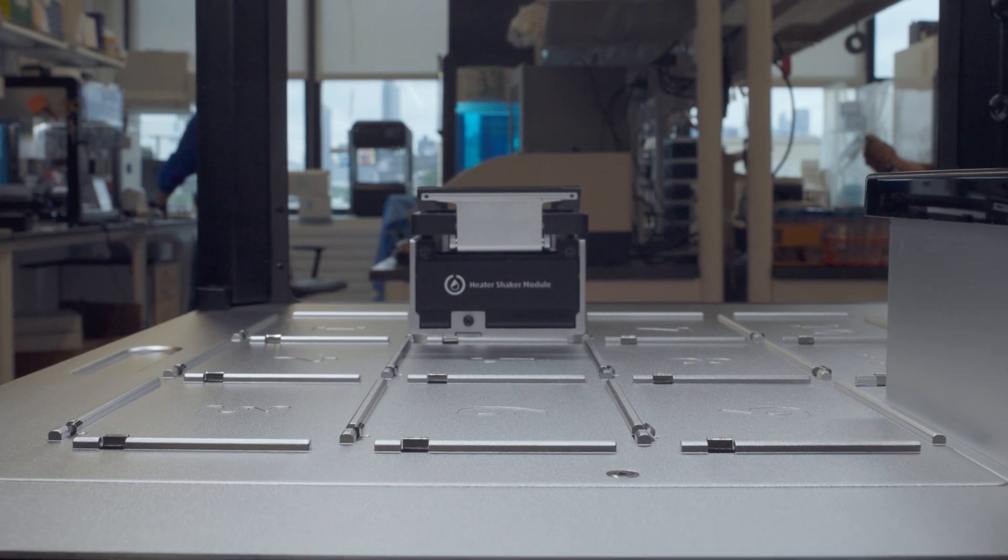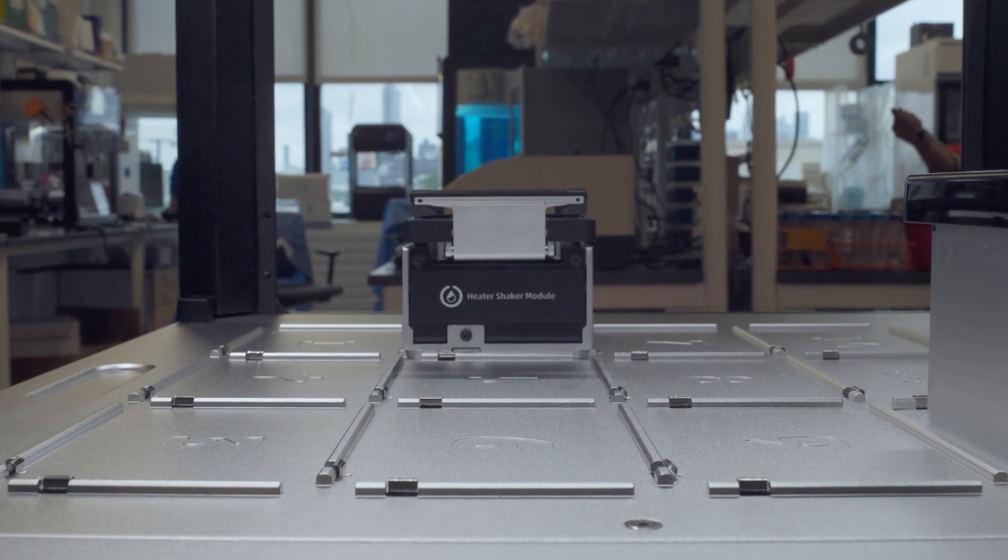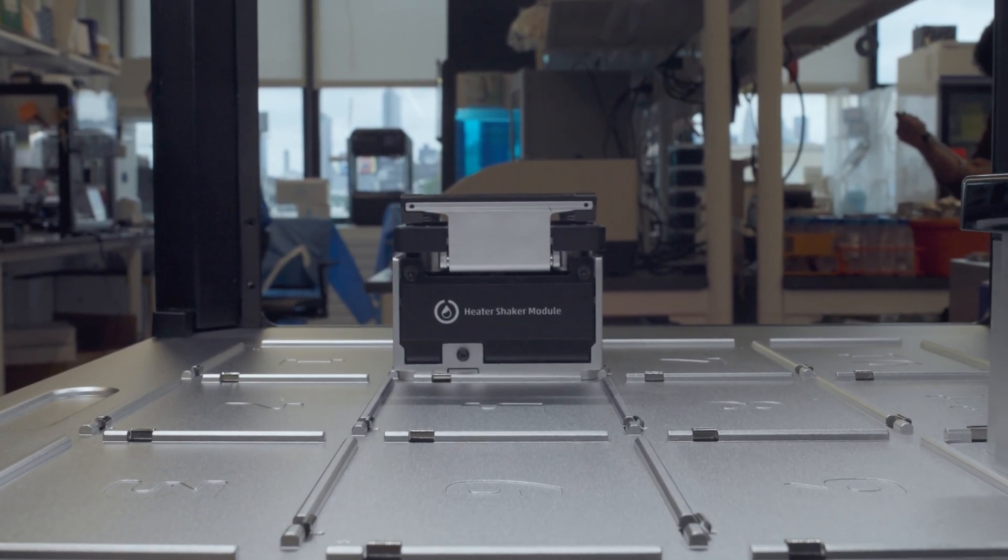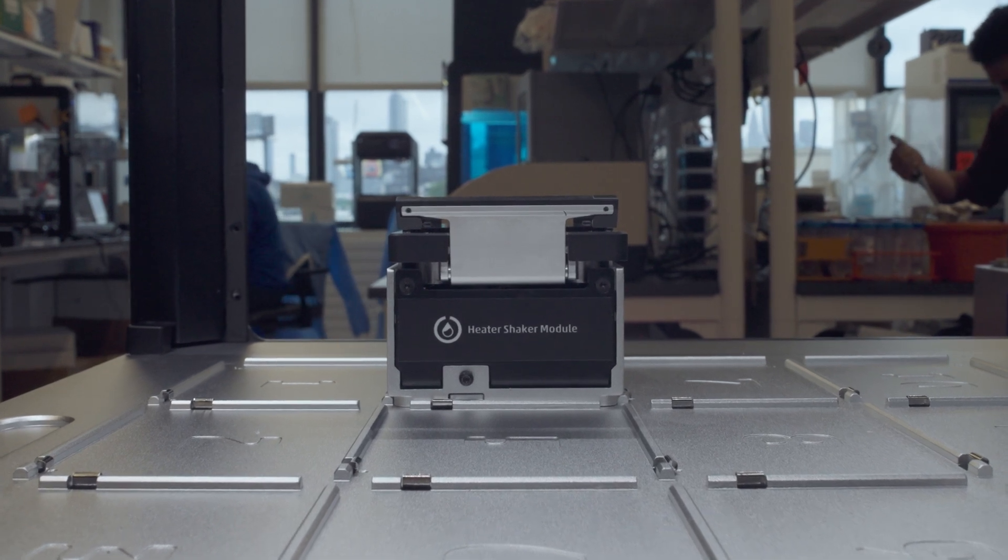This is the Opentron's Heater Shaker module. You can use it to automate heating and orbital shaking of samples on your Opentron's liquid handling robot.